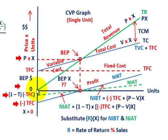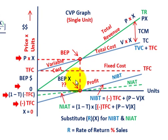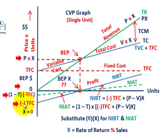Looking at where the lines intersect the y-axis: total cost starts at the fixed cost level. At x equal to zero, net income before taxes equals minus TFC, and net income after taxes equals (1 minus T) times minus TFC. We've now gone through the basic equations and the CVP graph to determine break-even quantities expressed as percentages of sales for targeted net income before and after taxes.